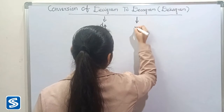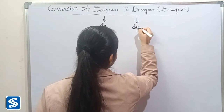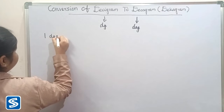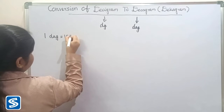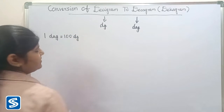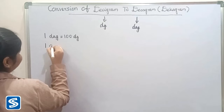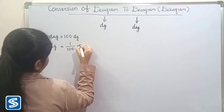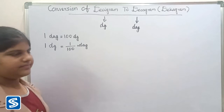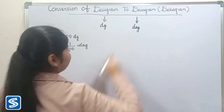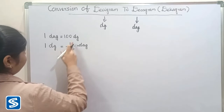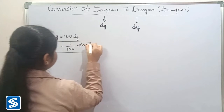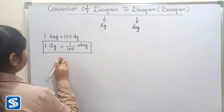We already know that one decagram is equal to 100 desigrams, so 1 desigram is equal to 1 by 100 decagram. So the formula for converting desigram into decagram is: 1 desigram is equal to 1 by 100 decagram. Now we will take some examples.